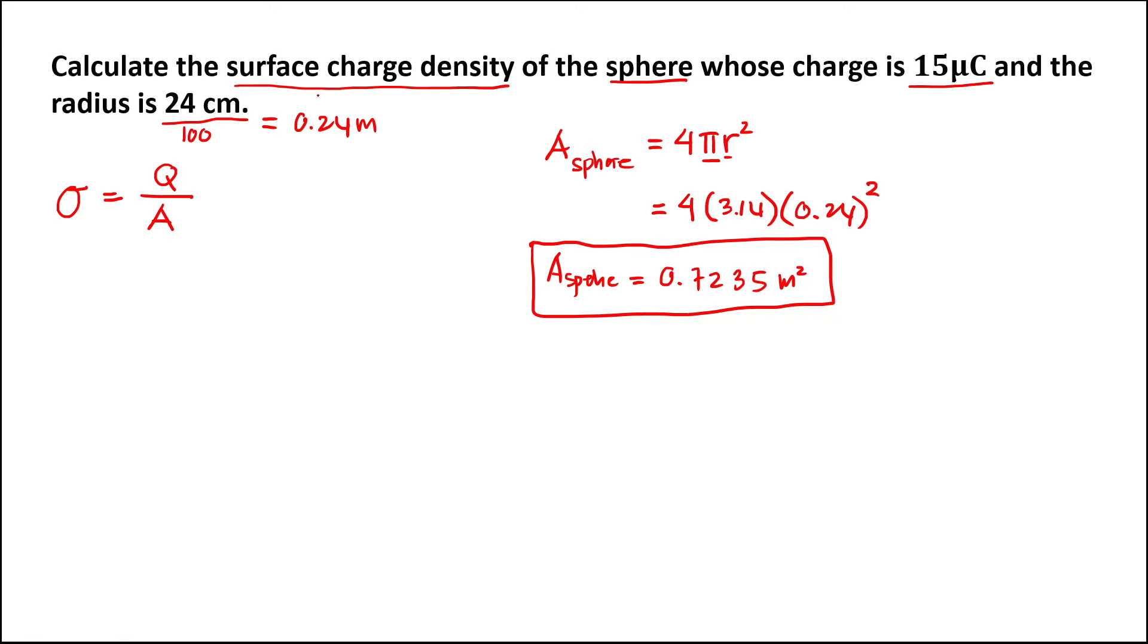Then we can find the surface charge density. We have the given charge, that's 15 microCoulombs, which is 15 times 10 to the power negative 6, then over the surface area, that's 0.7235 meters squared.